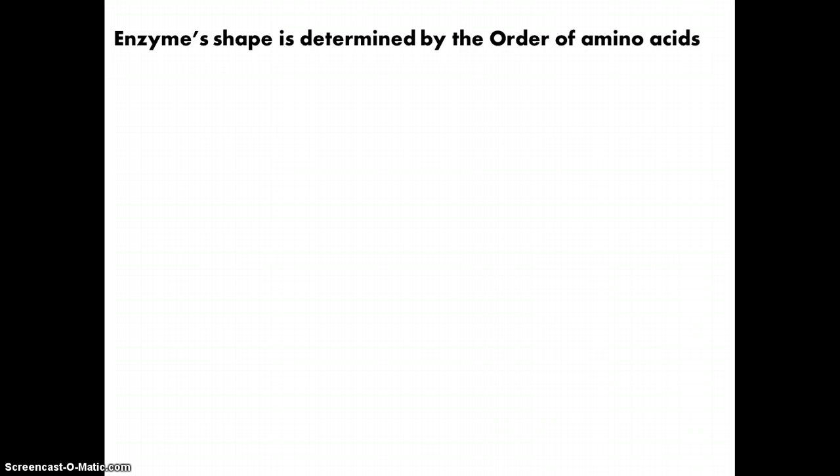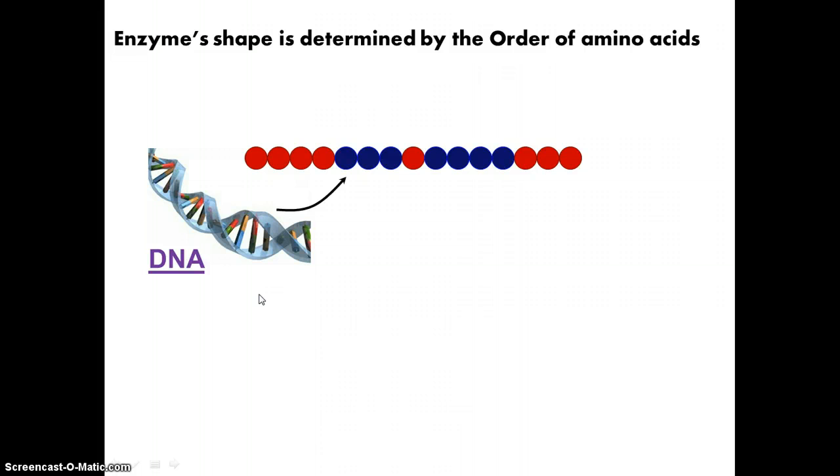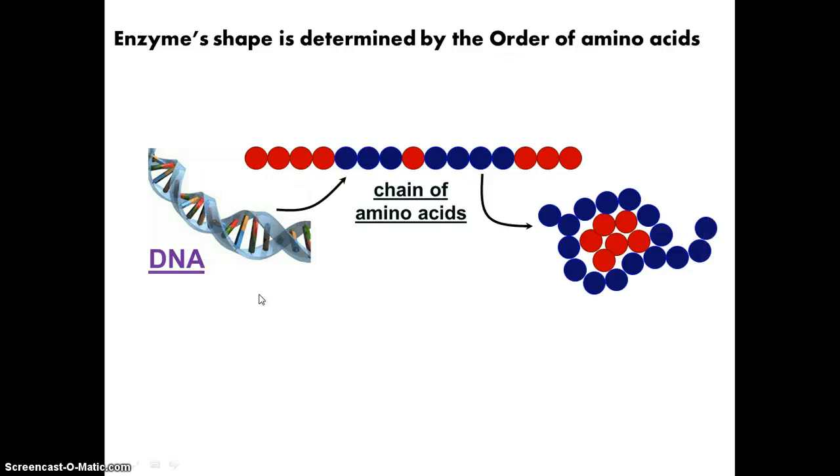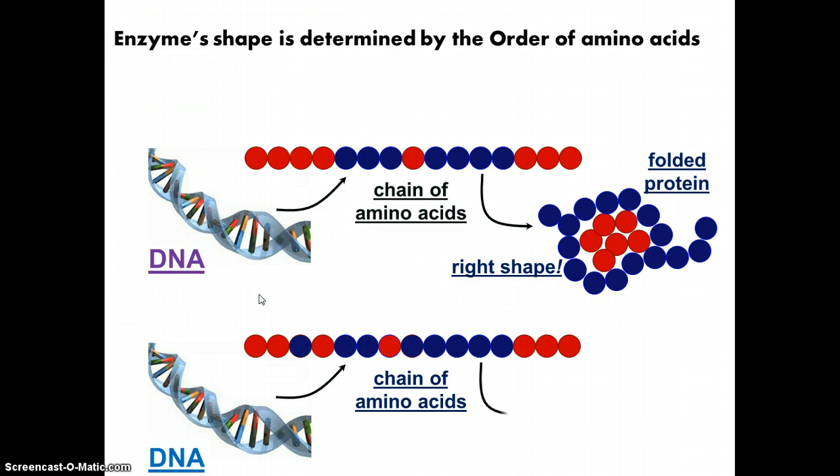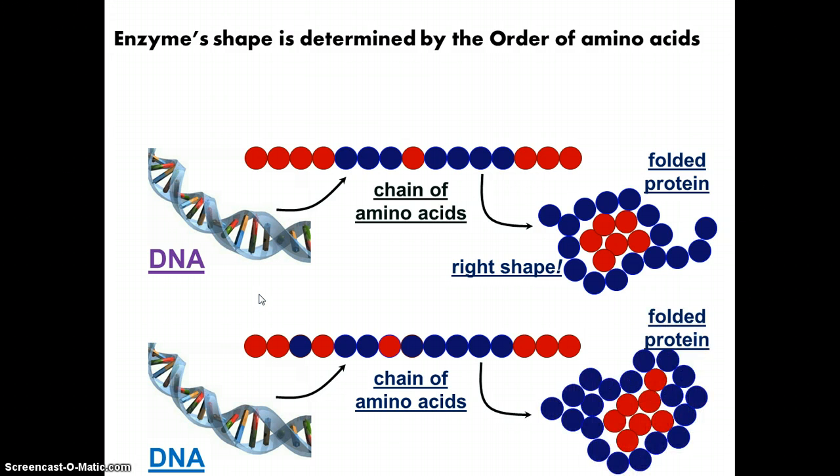So enzyme shape is determined by its order of amino acids. So that's, of course, determined by the recipe, which is held in the DNA molecule. So the DNA molecule determines the sequence of the amino acid, or chains of amino acid, and that gives you a particular shape of a folded protein. Now, if the DNA has a mistake, the chain of amino acids will be different, and your folded protein will have the wrong shape.